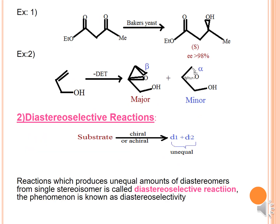The phenomenon which takes place in enantioselective reactions is known as enantioselectivity. For example, if you take a substrate molecule and treat it with Baker's yeast as the reagent, you will result in the S enantiomer — with enantiomeric excess greater than 98% — as your major product. Again, if you take an alcohol and treat it with minus-DET under Sharpless epoxidation conditions, the epoxidation always occurs on the alkene side. You will result in two products — beta as your major product and alpha as your minor product.